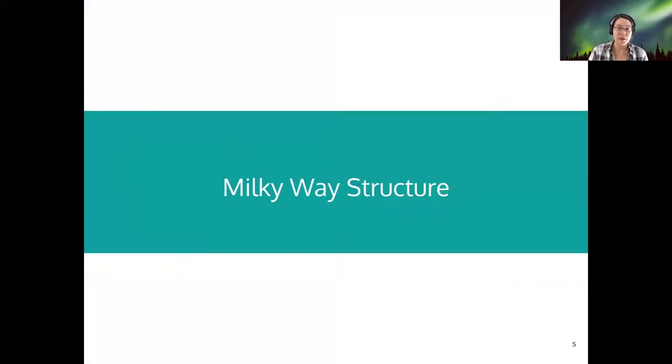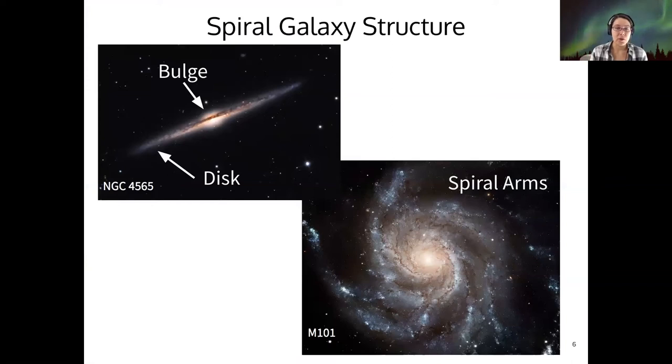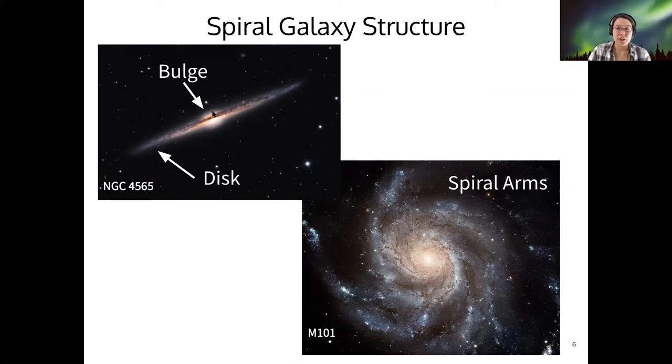So just quickly, the Milky Way structure. We've been over the structure of galaxies before. We know that spiral galaxies have spiral arms—that is their defining characteristic—but they also have a flat disk and a galactic bulge. So this overall structure is unique to spiral galaxies.